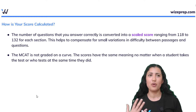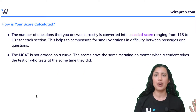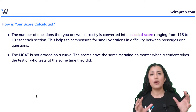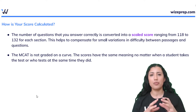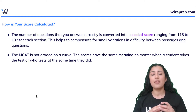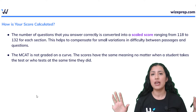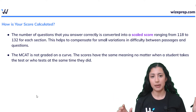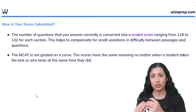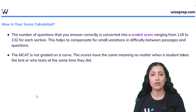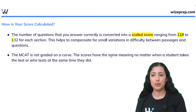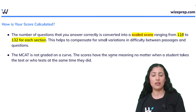Those numbers seem kind of random — 125, 123, 528 — so how do they get these numbers? What happens is they look at how many questions for a particular section you answered correctly, and then that's compared to all the other students who also wrote the MCAT. They convert the number of questions you answered correctly into a scaled score that ranges from 118 to 132 for each section.